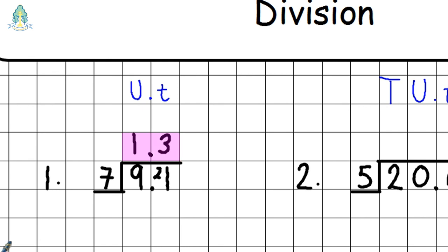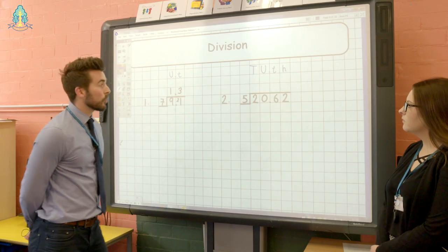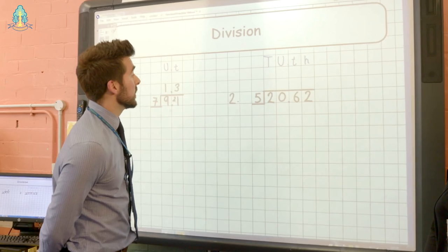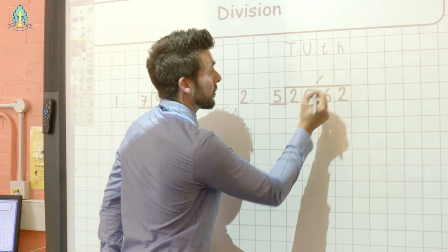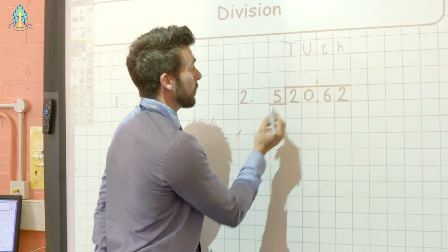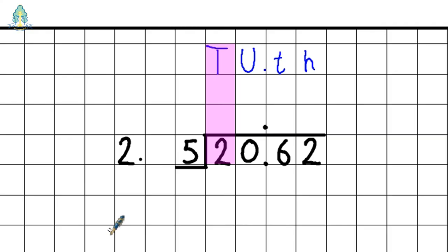Our second example is slightly more complicated because it has a decimal remainder. We put our decimal points in first to begin with. Looking at our left hand side: two tens divided by five — we can't do that, so we put zero and carry our two tens down into our units column. The two tens is equivalent to twenty units, so our number here is twenty divided by five, which is four.